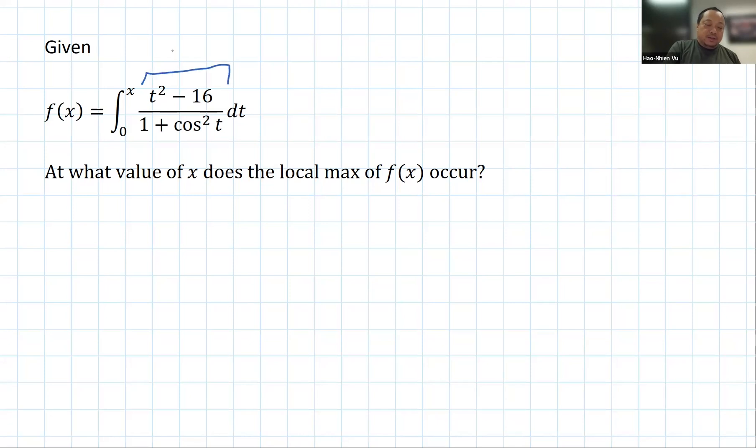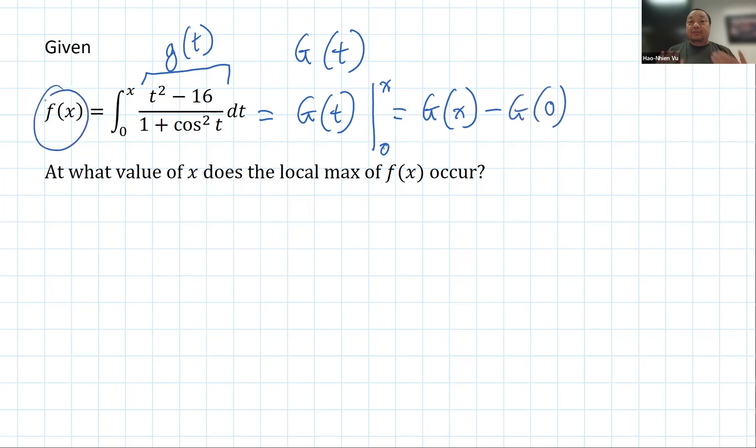So imagine that this is the function g of t, and the anti-derivative of it is some sort of capital G of t. So the whole thing is equal to the function capital G of t from the lower limit to the upper limit from zero to x. And so after you've plugged it in, the t is gone. But because the upper limit is the variable x, you end up with a function of x. That's why it's f of x, even though the integral is with respect to t, we end up with a function of x because it enters through this limit here.